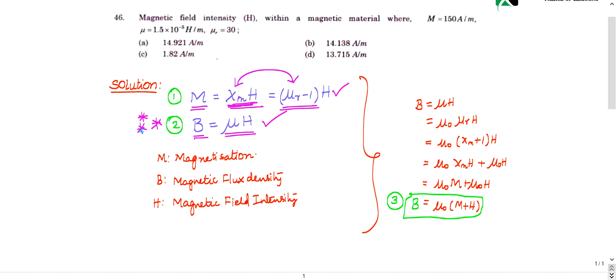If you know these two formulas, you can do any question. I would like to derive one more formula. Just look at here. You already know that B equals μ into H. μ is nothing but μ₀ into μᵣ. This also everybody knows. Then instead of μᵣ, I want to write in terms of χₘ. What is χₘ? χₘ is nothing but μᵣ minus 1. Then what is μᵣ? χₘ plus 1. So χₘ plus 1 into H. I'm splitting this: μ₀χₘH plus μ₀H.